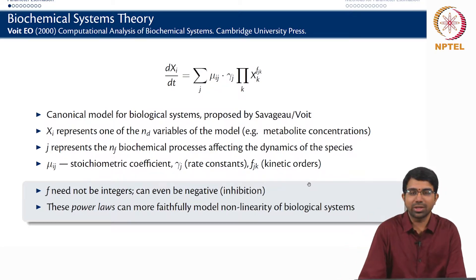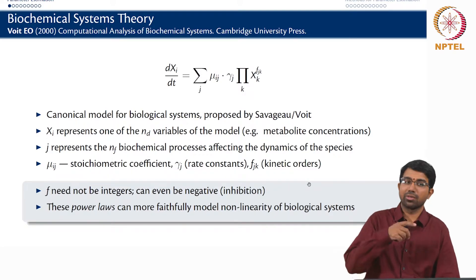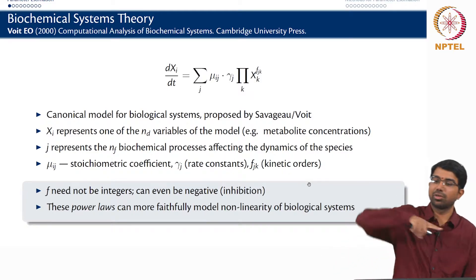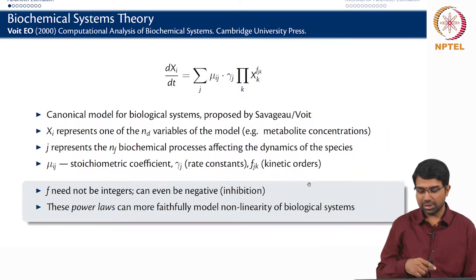In reality, you will not find that something is like purely a second order reaction. It will be like 1.8 order reaction and things like that. So those are the kind of exponents that you will end up having in these systems. And these power laws can also faithfully model the non-linearity of biological systems. They also give you usually saturating response. They do not give you unbounded responses. They end up giving saturation responses.